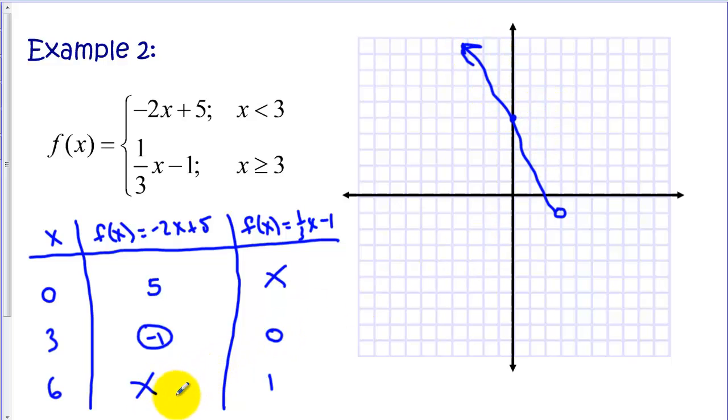And now we have a point at 3, 0. That's a closed circle. And 6, 1. And we have a line heading out that way. So that's our second example.